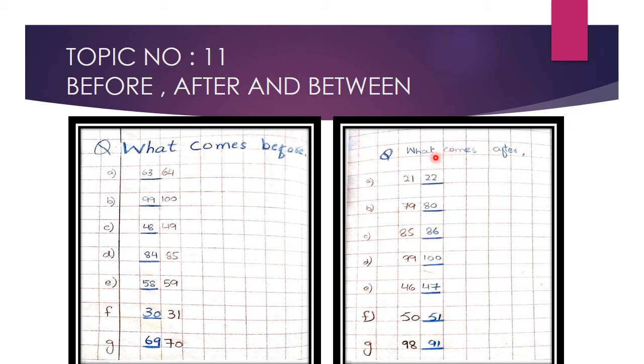This is another question: What comes after? After means the number that comes after. Now when we have the number, we have to show their number in this dash. In this part we have given 21, then after 21 is 22.